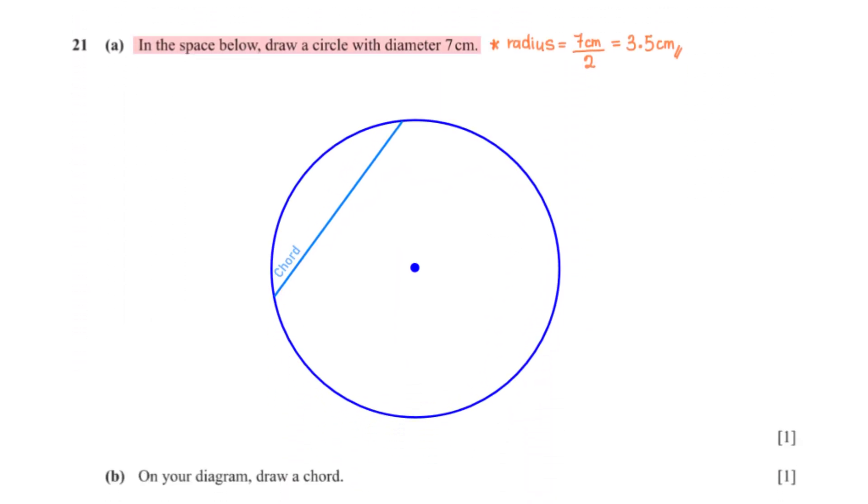In the space below, draw a circle with diameter 7 centimeters. First, we get the radius of the circle by dividing 7 centimeters by 2, giving us 3.5 centimeters. So now we measure the width of our compass to be 3.5 centimeters. Stand at any point and construct a circle. On your diagram, draw a chord. On the diagram, we've drawn a chord which is simply a line that connects any two points on the circumference of the circle. Note that this line should not pass the center of the circle because then it becomes the diameter.